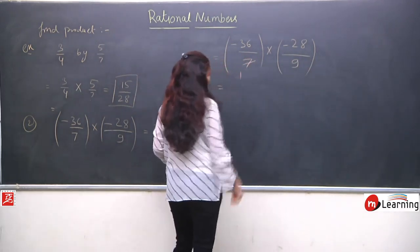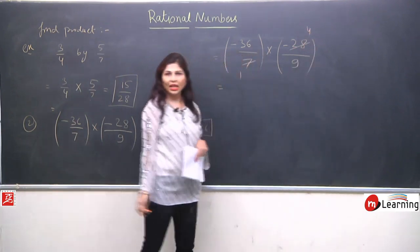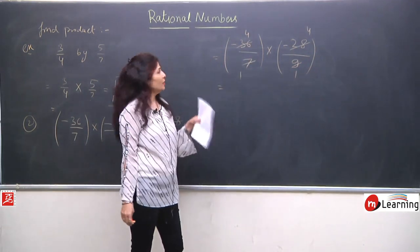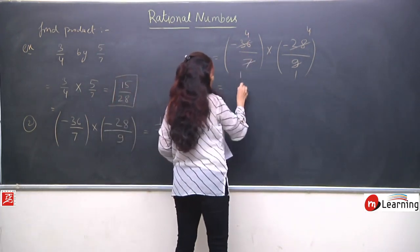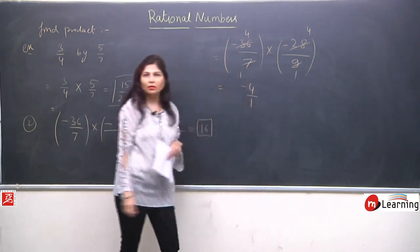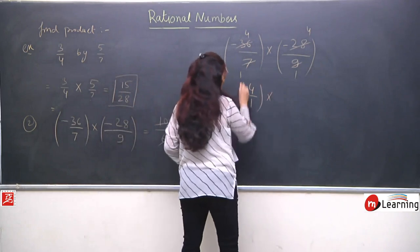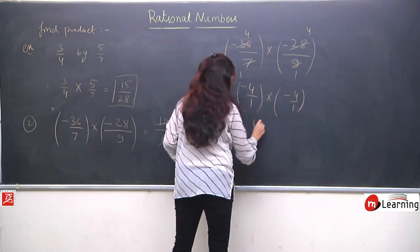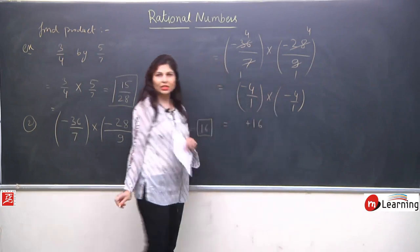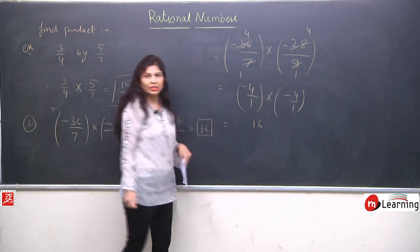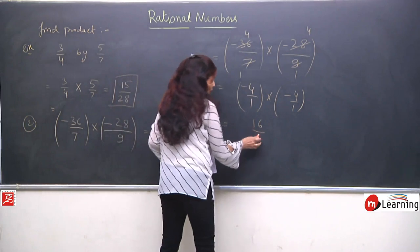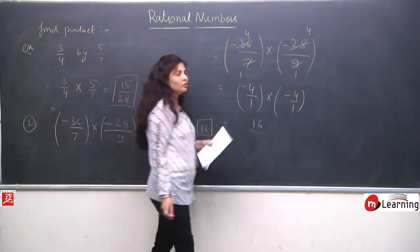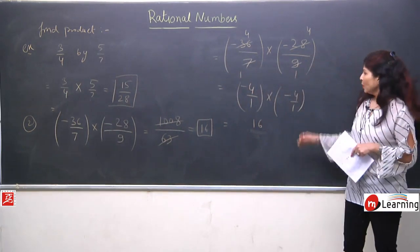After simplification, the question becomes (-4/1) × (-4/1). Minus times minus is plus, and 4×4 = 16 upon 1×1 = 1. When denominator is 1, there is no need to write it. So the final answer is 16. You can see this method — simplifying before multiplying — is much easier, especially when numbers are large.